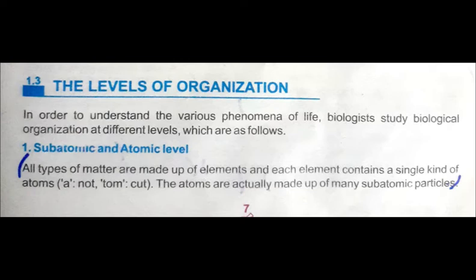The first level of organization is the sub-atomic and atomic level. The smallest unit that comes is the cell, and the cell is made up of molecules of different combinations. Similarly, molecules are made up of atomic and sub-atomic particles, which you can study in detail in chemistry.